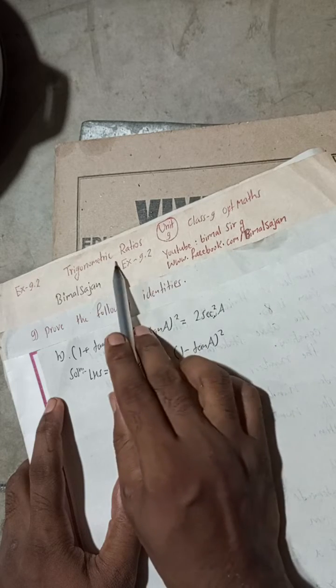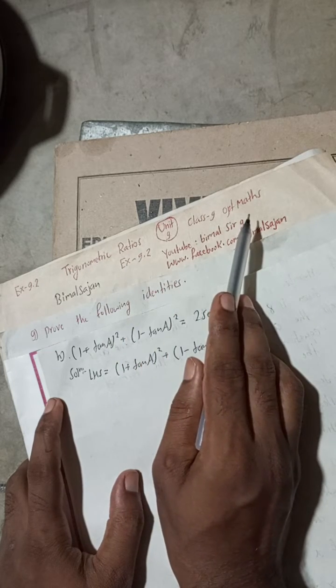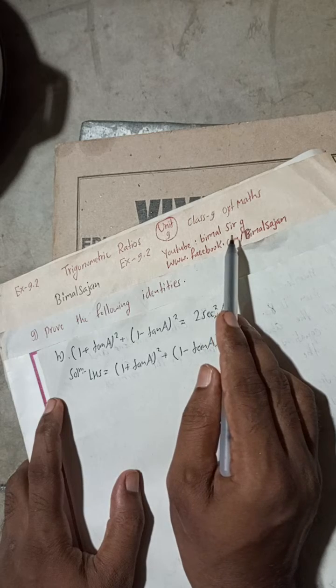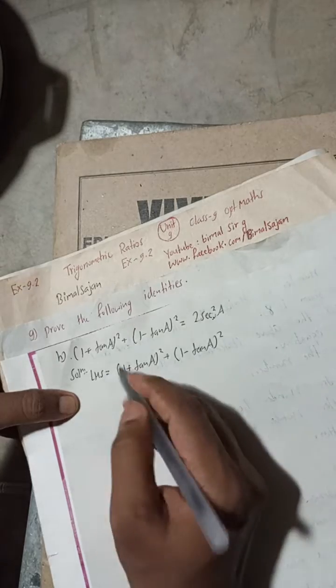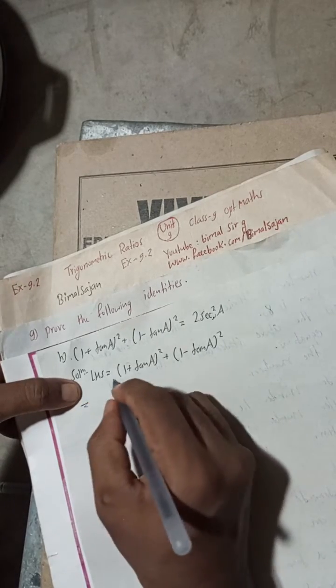This is the question of exercise 9.2, trigonometric ratios, class 9 OPT mathematics. Class 9 and 10 students, please don't forget to check the playlist, you will get a lot of solutions. So let's begin the solution. Here, LHS I have taken.